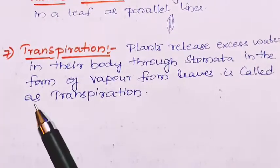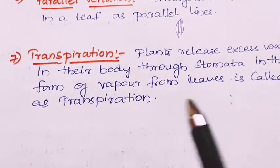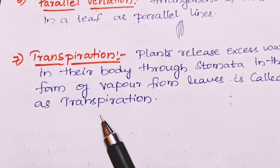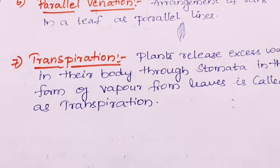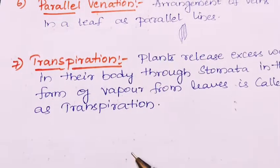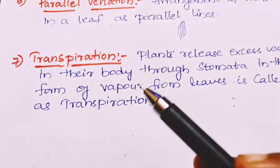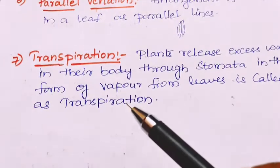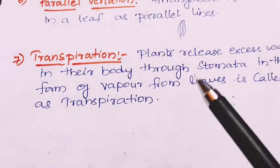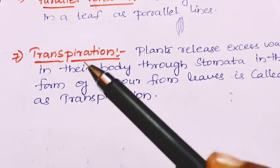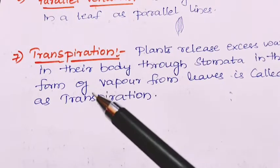Next: transpiration. Transpiration is the process by which plants release excess water from their body through stomata in the form of vapor from the leaves. Since stomata are small pores, water is released into the atmosphere through them — this process is called transpiration. Thank you, children.